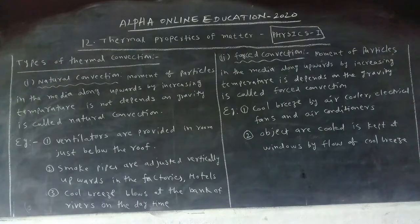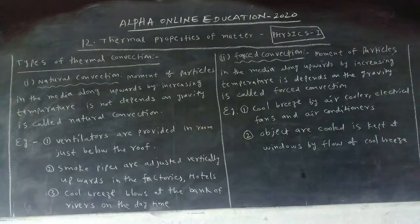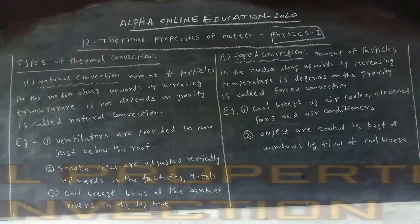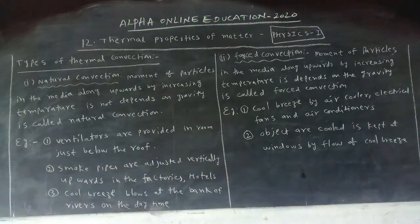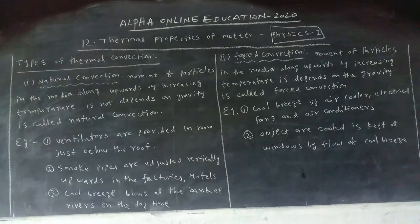Convection is of two types: natural convection and forced convection. In natural convection, the motion of liquid or gas particles does not depend on gravity. But in forced convection, it depends on gravity. These two types are very important for two-mark questions.